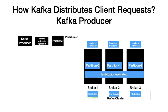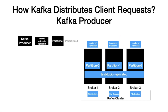The client will always invoke the leader of the partition. After that, the message is persisted into the file system of broker 1. The process is repeated for the following messages. The next message, DEF, goes to the partitioner. The partitioner resolves it to partition 1, and the leader of partition 1 is broker 2. So the request is directed to broker 2 and it gets persisted into the file system of broker 2.